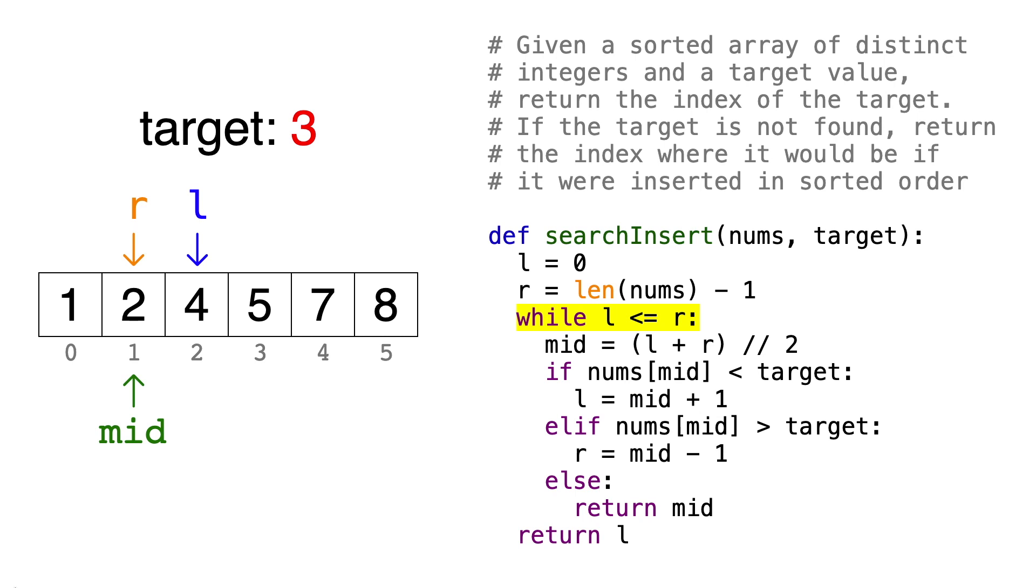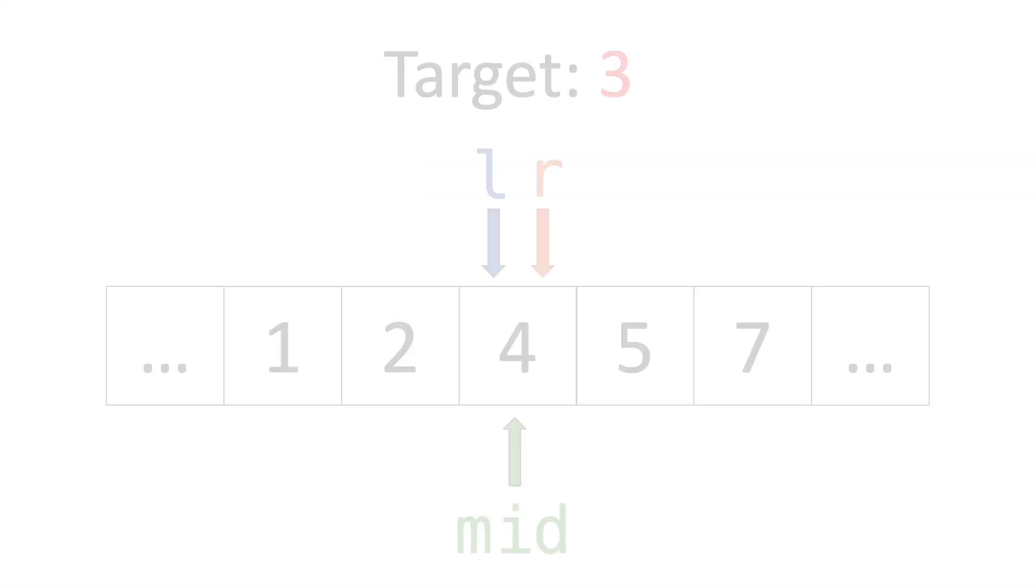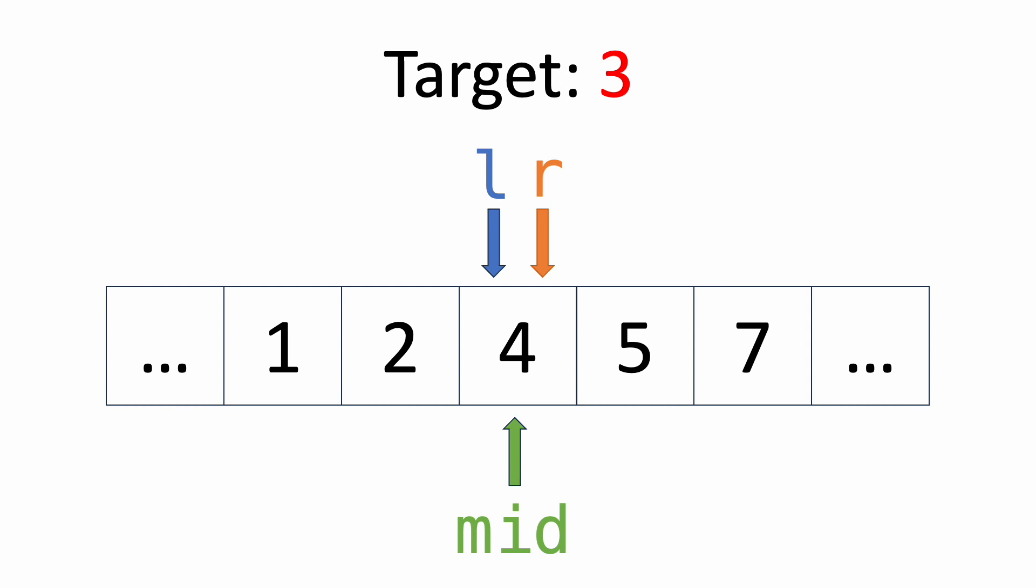So now the question is, at which index would 3 be at if it were inserted in sorted order? You can see that the answer is just to return the left index, l, but let me explain why. So if we're at this point where the left index is greater than the right index, one of two things had to have happened. The first possibility is that they converged on a single number, and that number happened to be less than the target, so the left pointer got moved up. This is what happened in the example that we were just doing. The second possibility is that they converged on a single number, and that number happened to be greater than the target, so the right pointer got moved down.